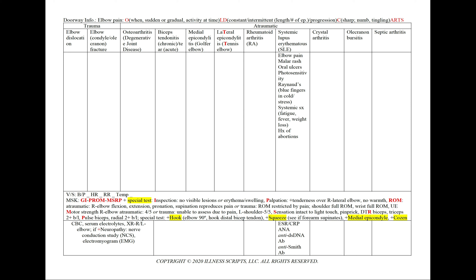In systemic lupus erythematosus, we'll find elbow pain, malar rash, or ulcers. Our patient can also be complaining of photosensitivity or Raynaud's — blue fingers in the cold or times of stress. We could find systemic symptoms in our review of symptoms: fatigue, fever, or weight loss. We can note a history of abortions in our OB/GYN history. We'll order ESR-CRP, ANA, anti-double-stranded DNA antibodies, and anti-Smith antibodies.